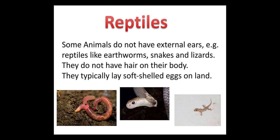The next one is about reptiles. Some animals do not have external ears — for example, reptiles like snakes and lizards. They do not have hair on their body. They typically lay soft-shelled eggs on land. You can see three pictures of reptiles: the first one is an earthworm, the second is a snake, and the third one is a lizard.